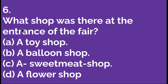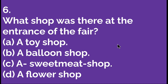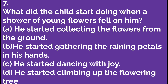What shop was there at the entrance of the fair? Option A: a toy shop. Option B: a balloon shop. Option C: a sweetmeat shop. Option D: a flower shop. A sweetmeat shop — at the entrance of the fair there was a sweetmeat shop. So C is the right option. Let's move to the next question.